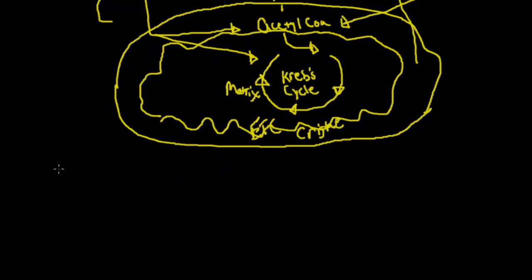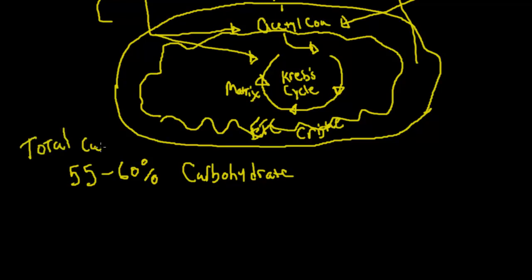Let's talk about how much of these macronutrients should we take in. We'll link this a little bit to nutrition here. 55% to 60% of your total caloric consumption should happen from carbohydrate. 20% to 30% should come from fats.